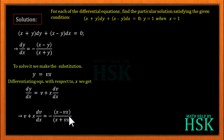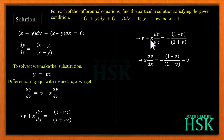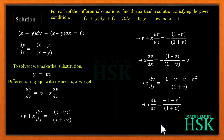We obtain v + x(dv/dx) = -(x - vx)/(x + vx). Taking x common and cancelling in numerator and denominator gives the right hand side as -(1 - v)/(1 + v). Taking v to the right hand side and using LCM, x(dv/dx) = [-(1 - v) - v(1 + v)]/(1 + v) = -(1 + v²)/(1 + v).